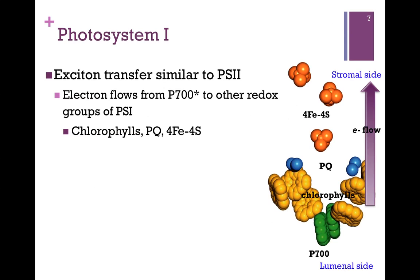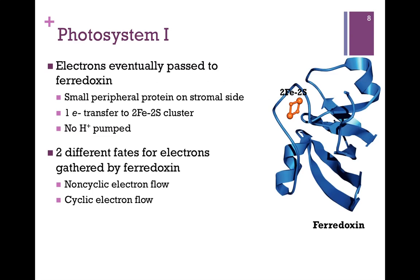Electron flow in Photosystem I is similar to Photosystem II — it goes from the luminal to the stromal side. The redox centers include chlorophylls, plastoquinones, and iron-sulfur clusters. The electrons are passed through Photosystem I following photo-oxidation to a soluble protein, ferredoxin. It carries a 2-iron, 2-sulfur cluster and is a one-electron carrier, so if we have four electrons to transfer, we need four ferredoxin molecules. There are no protons pumped in this case. It's a small peripheral protein on the stromal side, which is why the electron flow from luminal to stromal is important — so ferredoxin can pick up those electrons.